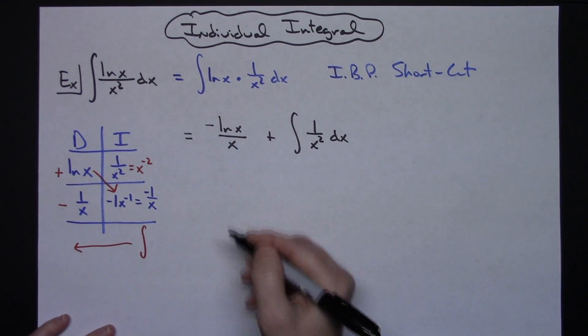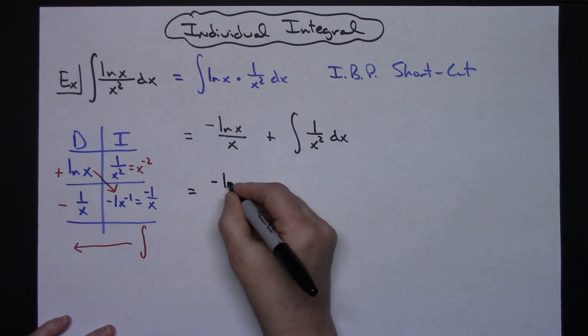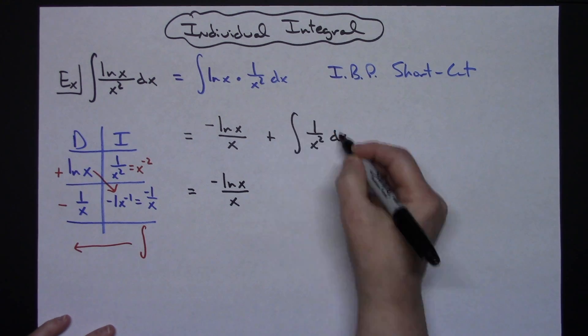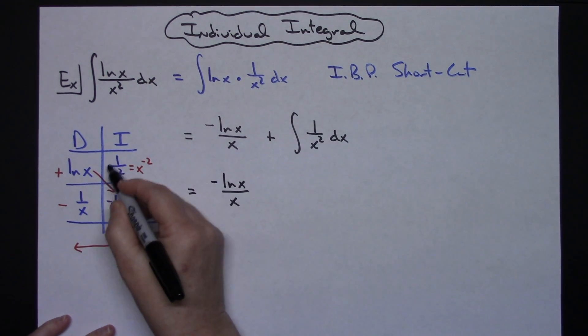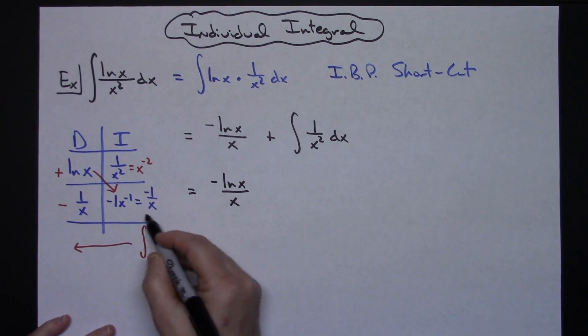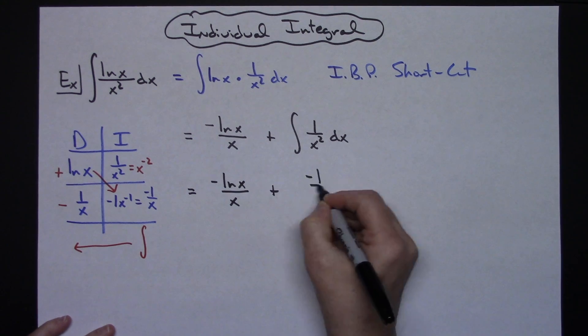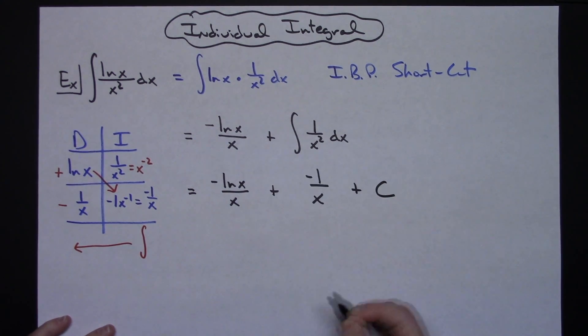Now this one has already been integrated, so I'm just going to write that down again: negative natural log of x over x. Now this part right here, well I integrated it right here, so there's no reason to integrate that again. I know the answer is going to be a negative one over x, so negative one over x and then plus C.